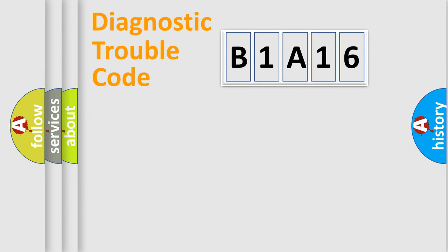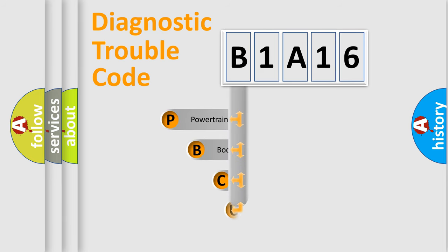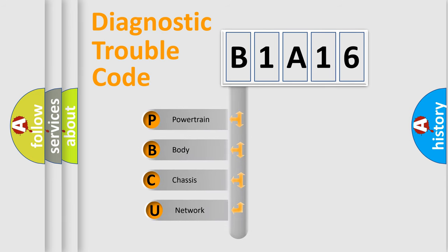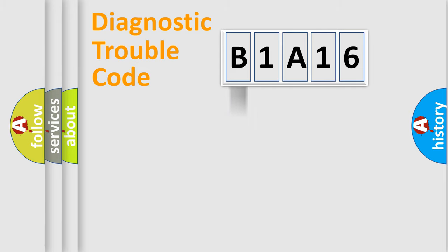Let's do this. First, let's look at the history of diagnostic fault code composition according to the OBD2 protocol, which is unified for all automakers since 2000. We divide the electric system of automobile into four basic units: Powertrain, Body, Chassis, and Network.